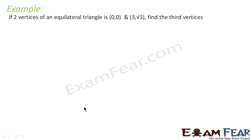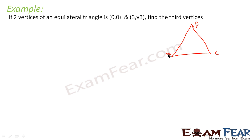The question says: if two vertices of an equilateral triangle are (0,0) and (3, √3), we have to find the third vertex. This is an equilateral triangle ABC. We are told that A is (0,0) and B is (3, √3), and C you have to find. Let's assume C is (X, Y).